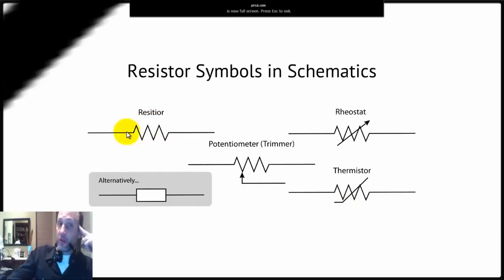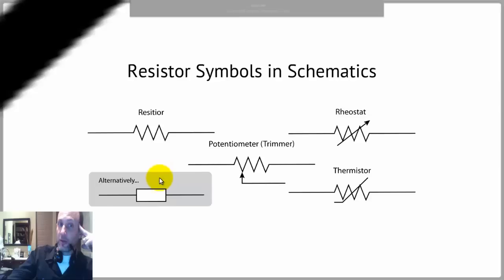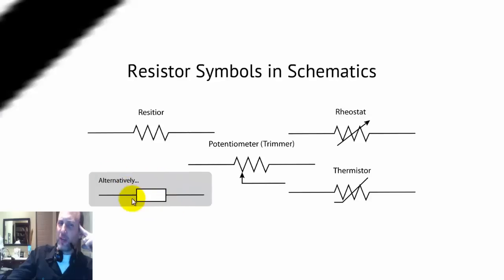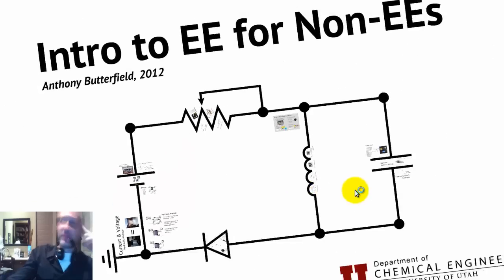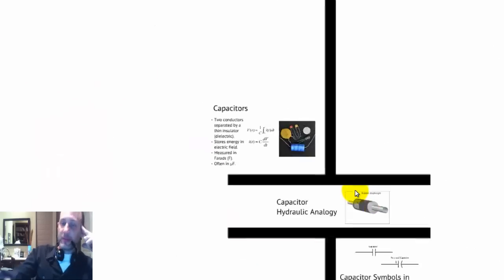In symbols, when you're drawing your schematics, resistor typically would look like this. In the UK, I believe they draw them like this. Potentiometer looks like this. You can actually dial where this line is or a rheostat. You can control the resistance there. Or it's a thermistor. It would look something like this.